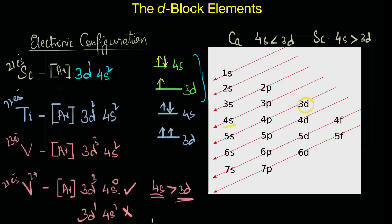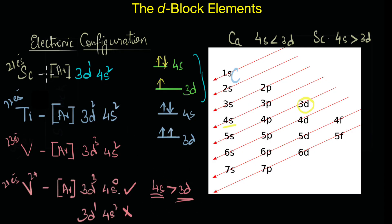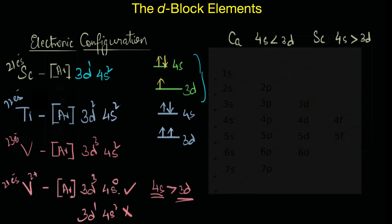This has been confirmed through ionization studies, which showed that the electron was actually ejected or removed from the 4s orbital and not from 3d. Moving on, the next element of the d-block after vanadium is chromium.